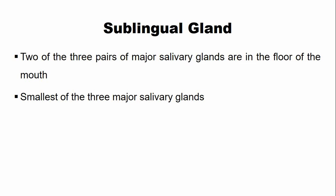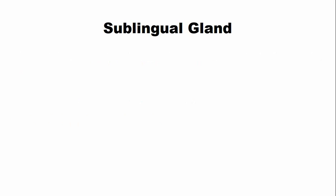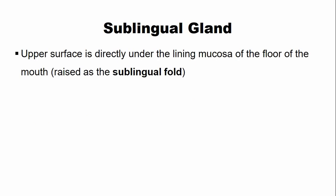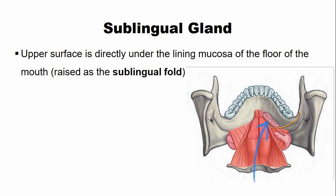The order from largest to smallest is: parotid gland, followed by the submandibular gland, and the smallest is the sublingual gland. The secretion of the sublingual gland is basically mucous secretion. The upper surface of the gland is directly under the lining mucosa of the floor of the mouth, and it is marked by a raised area known as the sublingual fold, as you can see in this picture. The gland rests on the mylohyoid muscle, just above it, and the upper surface is covered by lining mucosa.